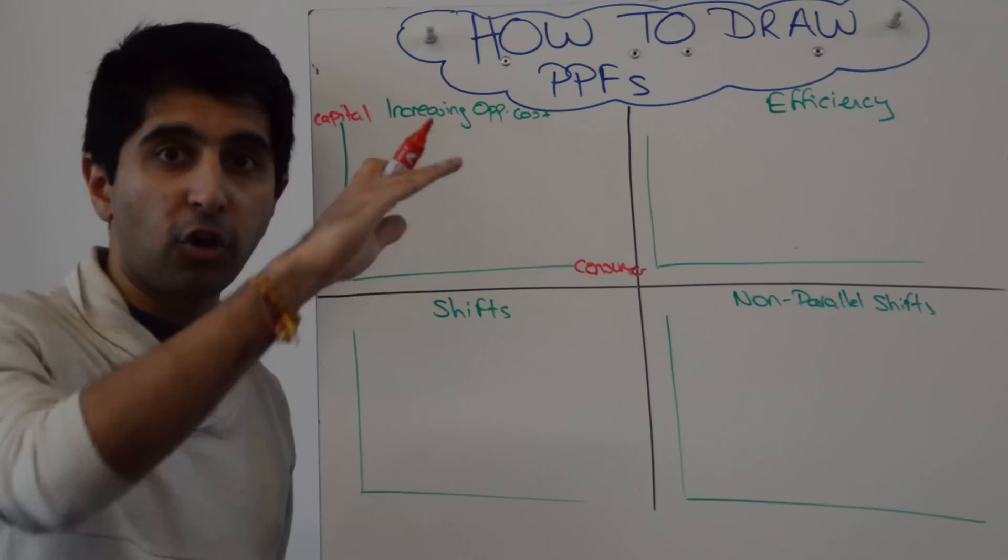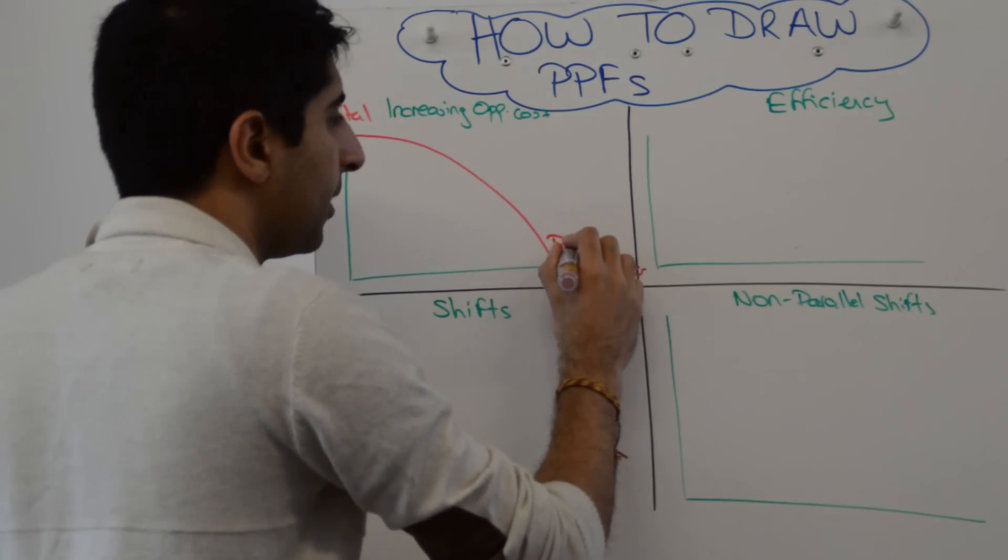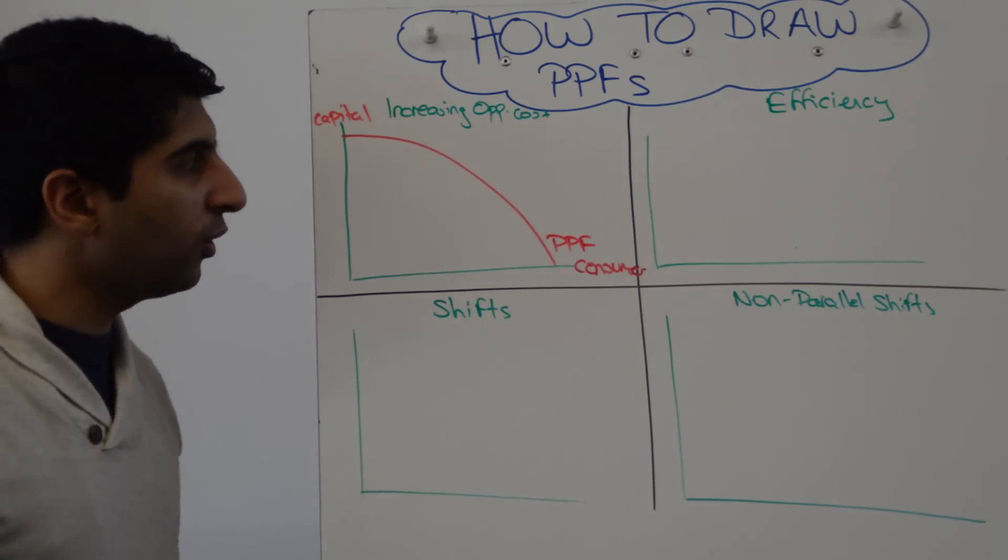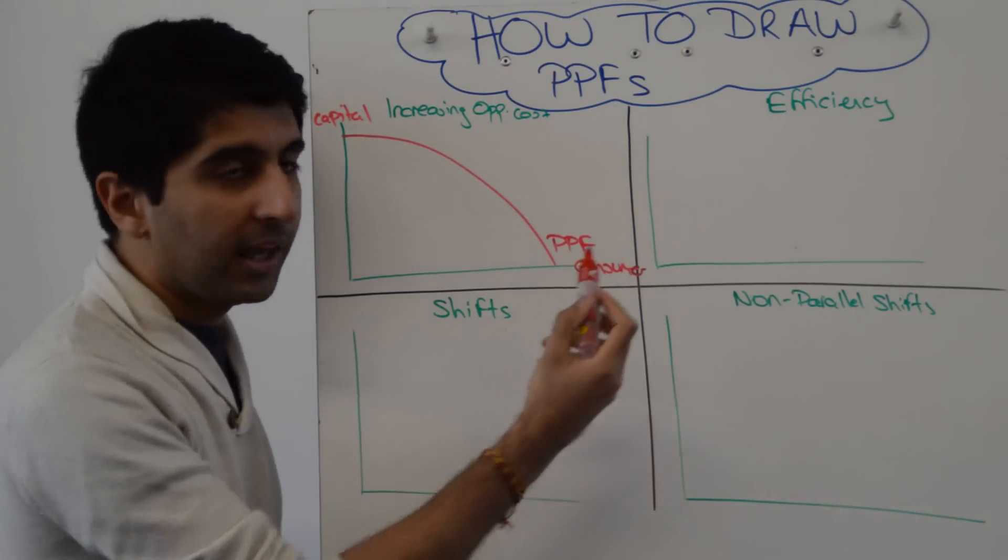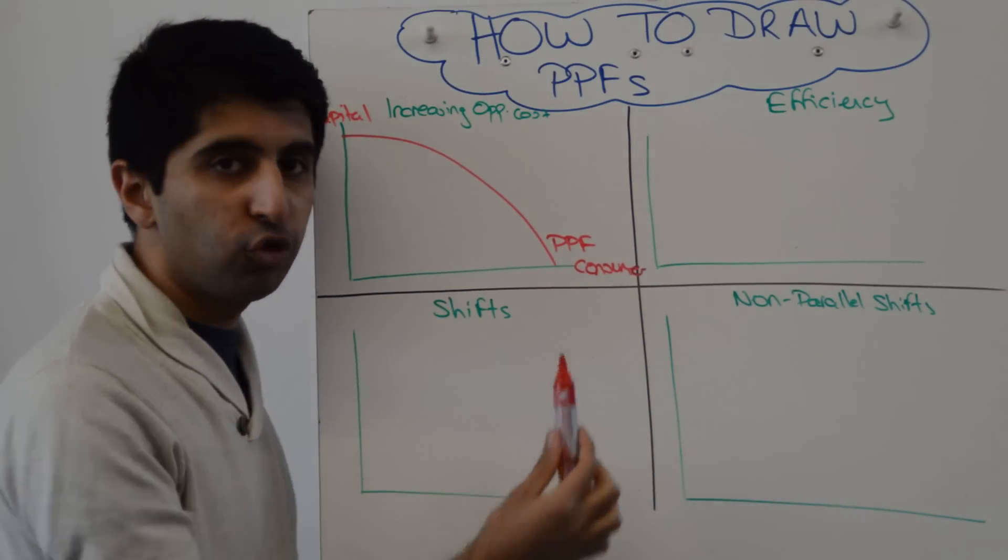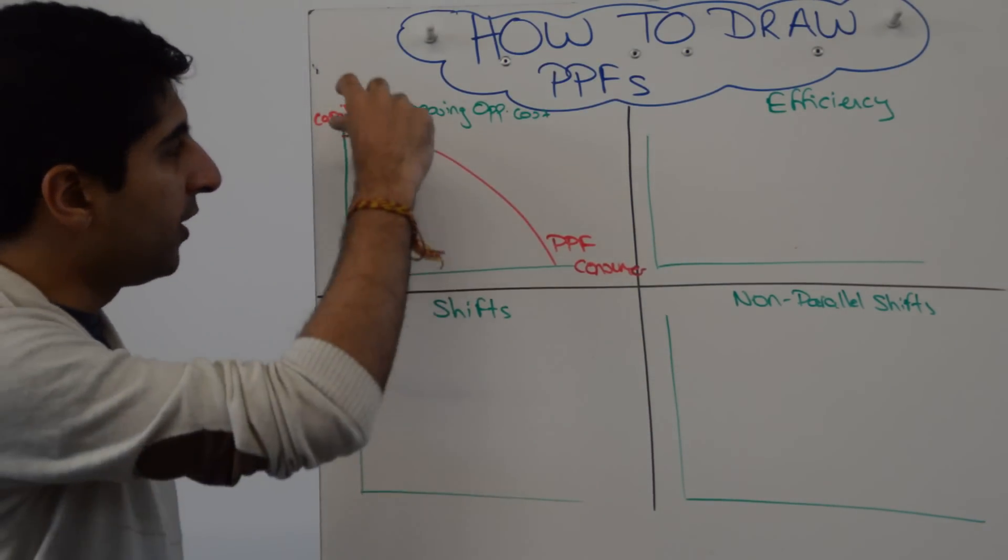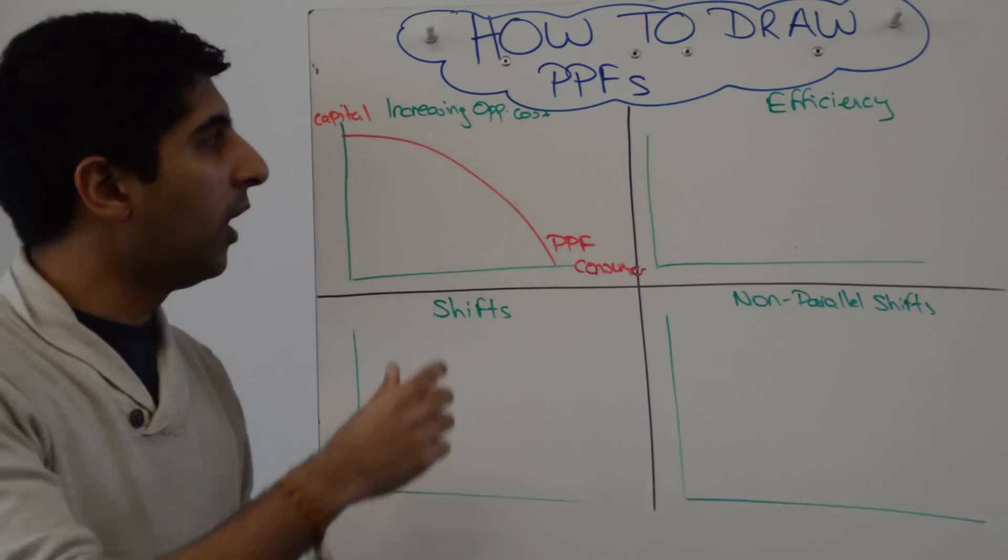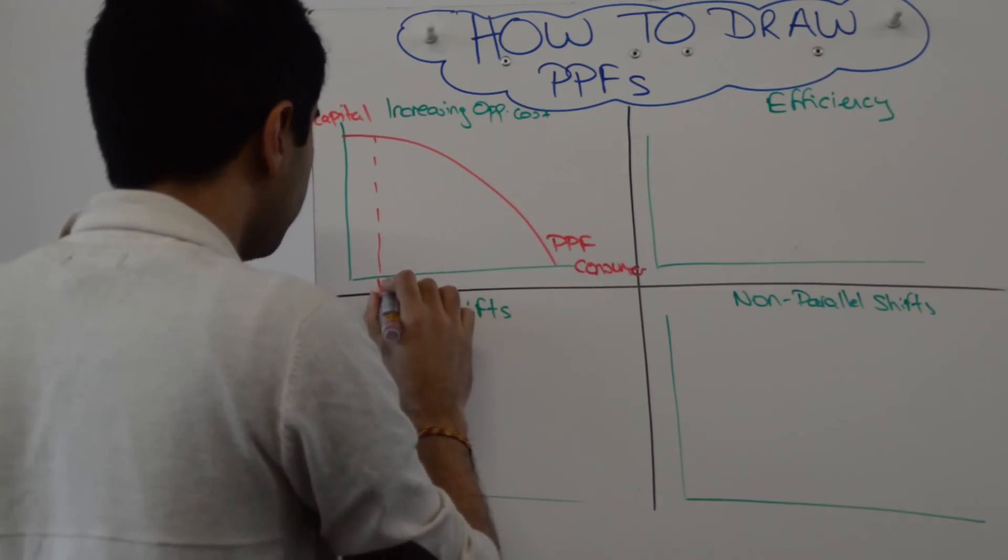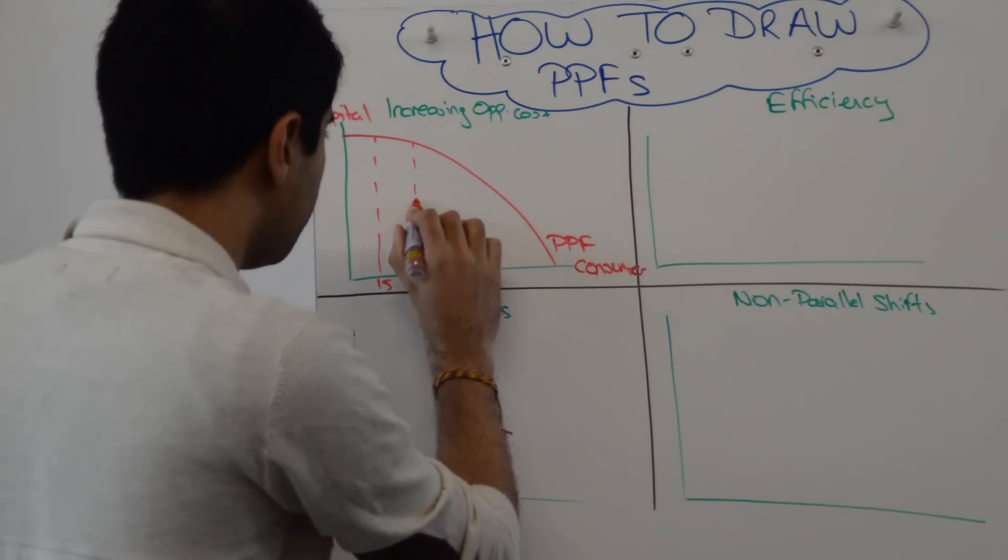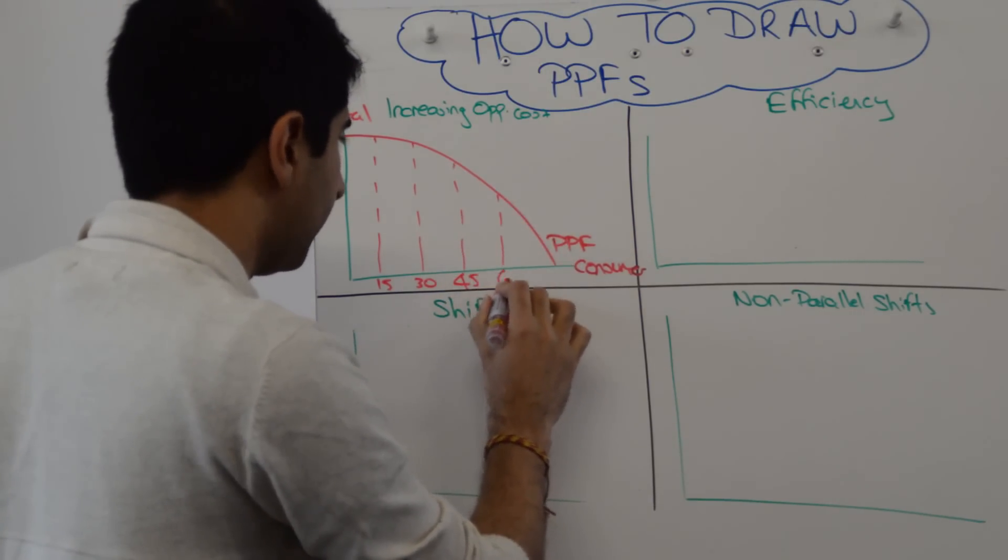Let's start by showing increasing opportunity cost on a PPF. Label the y-axis with capital and label the x-axis with consumer. Increasing opportunity cost PPF is going to be concave. It's going to look something like that and label it - you must label it PPF. Now, we want to show increasing opportunity cost. The way you do it is you increase the production of one thing. I always take whatever's on the x-axis. Increase the production of consumer goods by a constant figure each time. I'm going to do by 15 units each time and then on the y-axis show how we're giving more and more up of capital goods in the process.